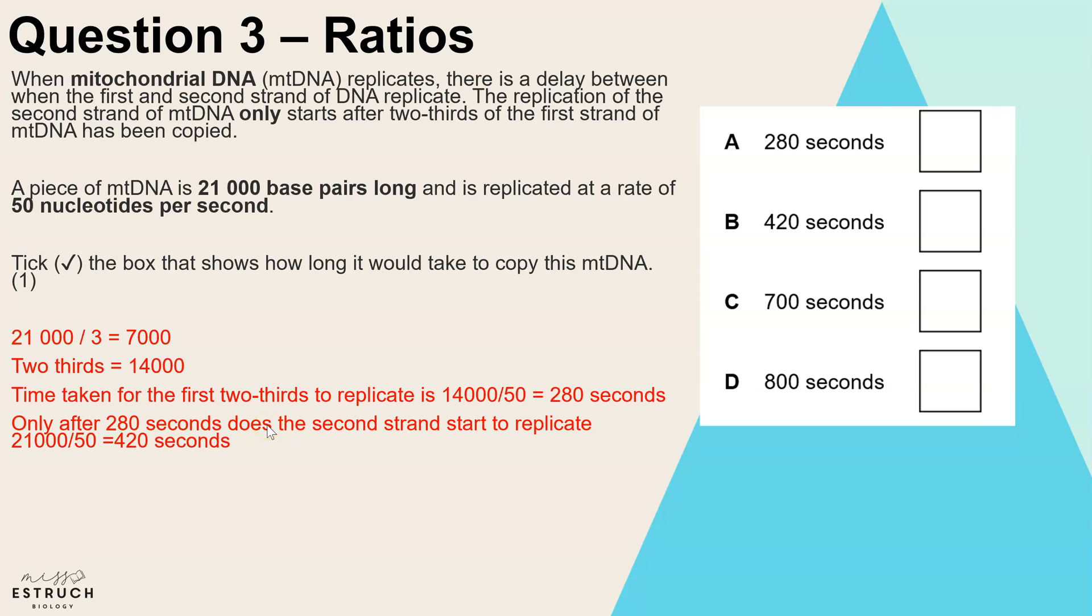So only after 280 seconds does the second strand start to replicate, and the second strand is also 21,000 base pairs long. So to work out how long that second strand will take to replicate again, we divide it by 50. 21,000 divided by 50 is 420 seconds. So the final step then is adding those together because it's 280 seconds before the second strand even begins and then that has to fully replicate. So that is why the answer would be 700 seconds.